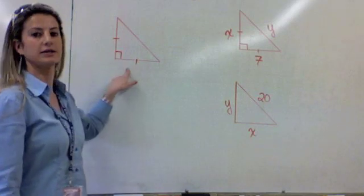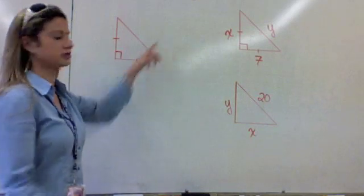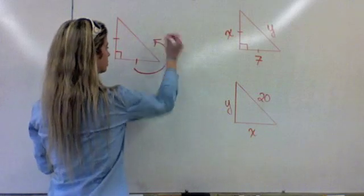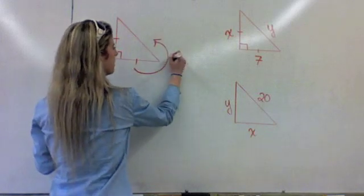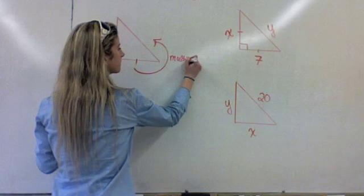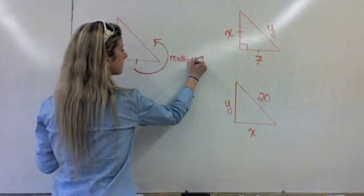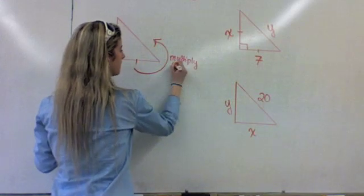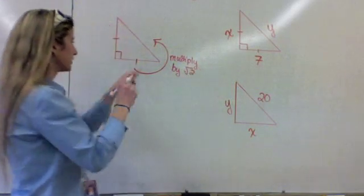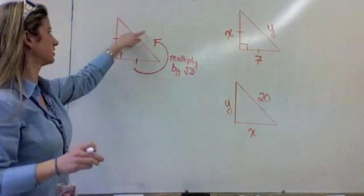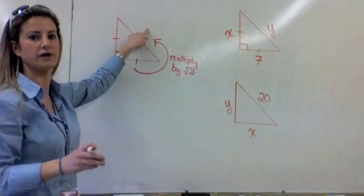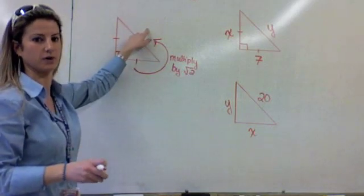To go from leg to hypotenuse, that's really easy — you simply multiply by root 2. So whatever this number is, the hypotenuse is always this number times root 2. Very, very easy.